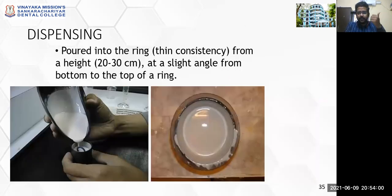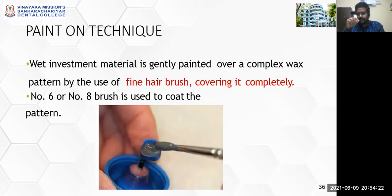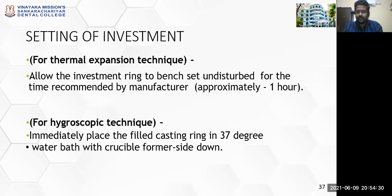The investment is poured into the ring from a height of 20 to 30 cm at a slight angulation from the top of the ring to avoid any air impairment. There is also a paint-on technique where you use a paint brush (number 6 or 8), take the mixed investment material and paint over the pattern first nicely so the whole pattern is completely painted, then regularly pour investment material around it. The whole assembly should be left for at least one hour for proper thermal expansion and setting to occur.